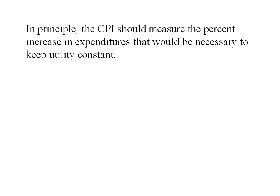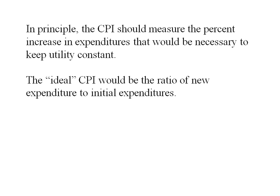So in principle, when we're looking at a CPI, it should measure the percent increase in the expenditures that would be necessary to keep the utility constant. So ideally it'd be the ratio of the new expenditure to the initial expenditure. In our case, the new expenditure is 720 and our original expenditure is 480, giving us 1.5, telling us the cost of living went up by 50 percent.